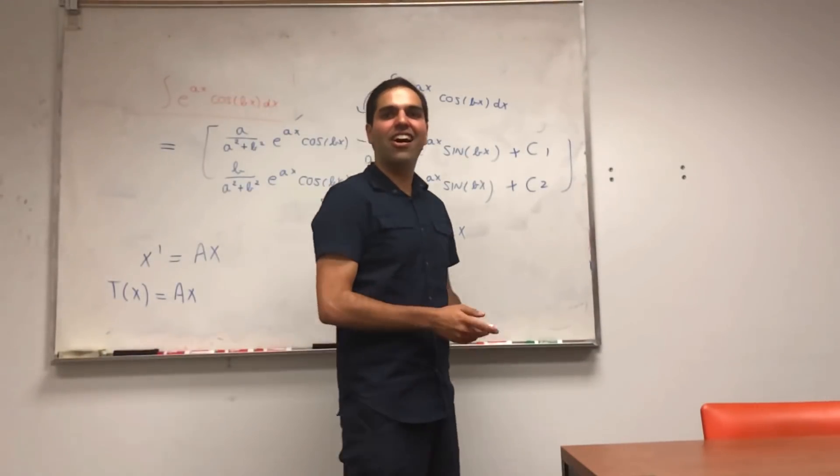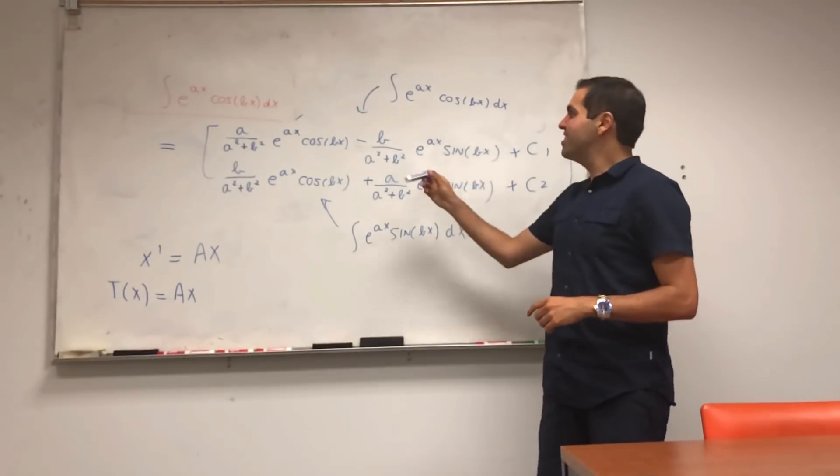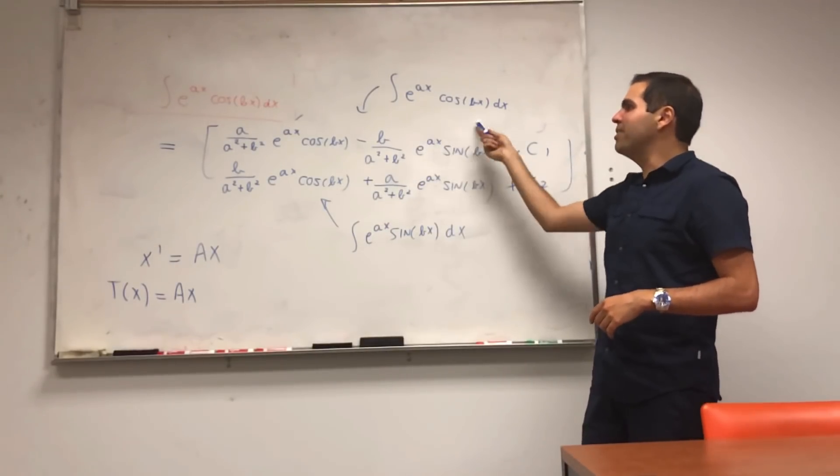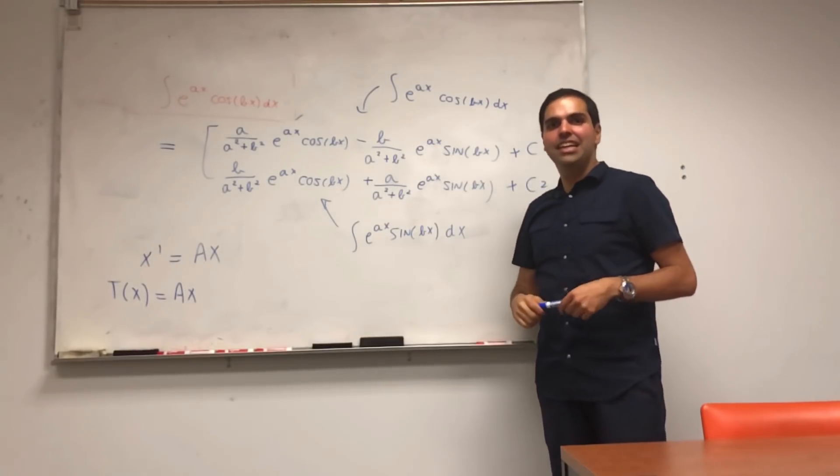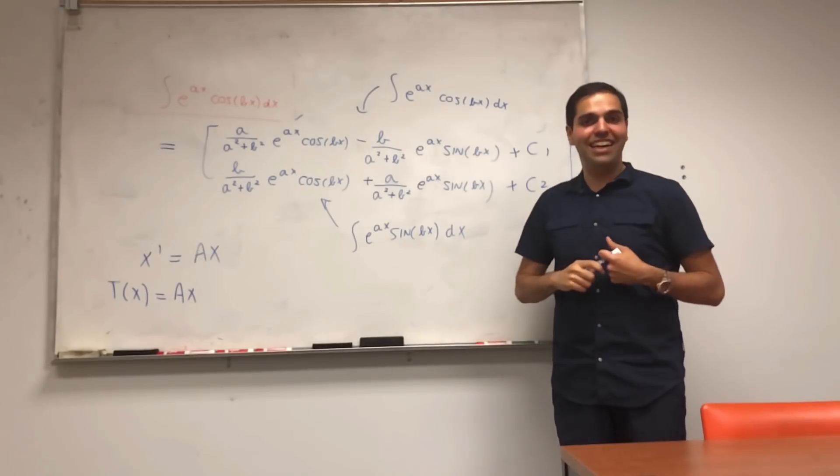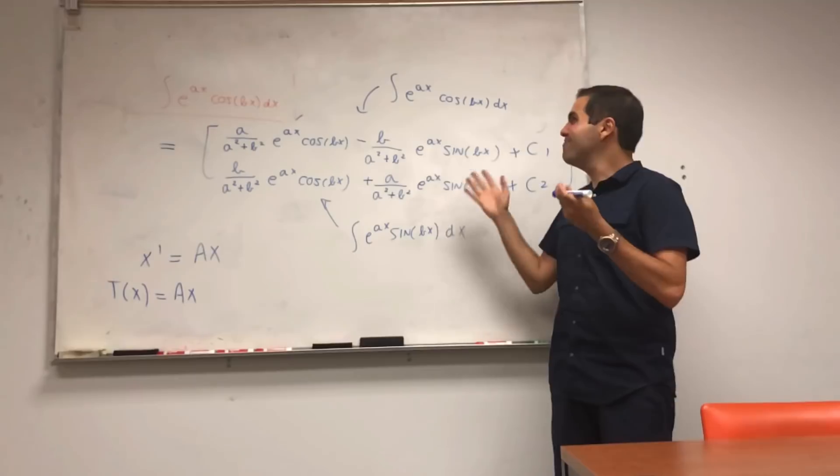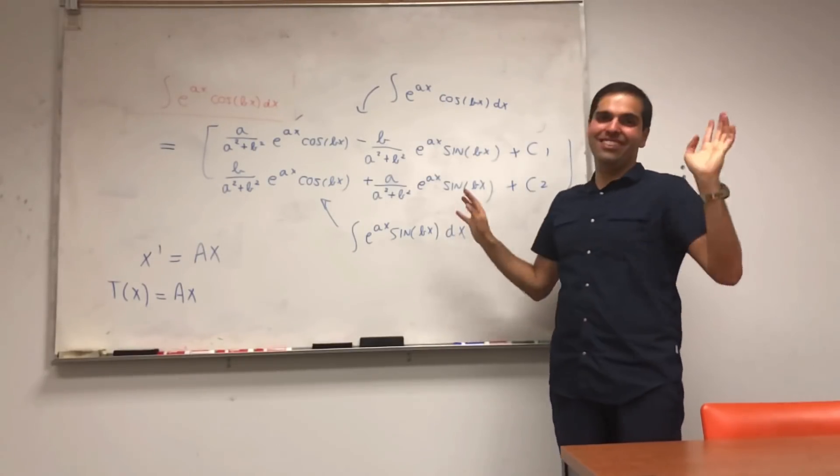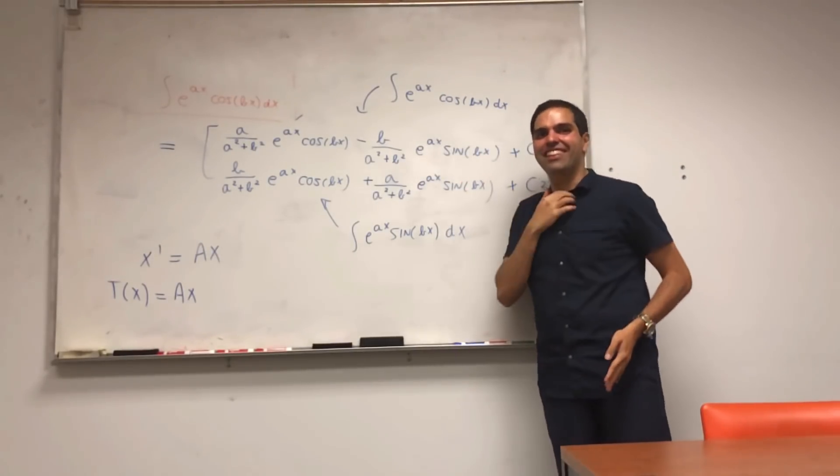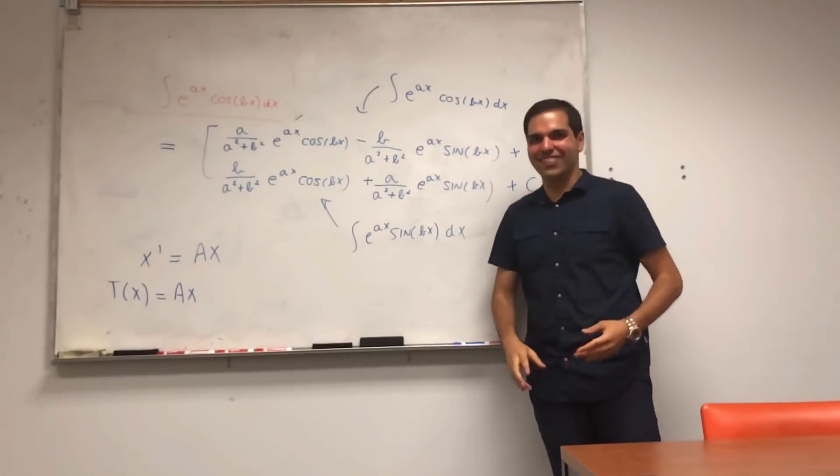And at least in the constant coefficient case, it just gives you linear combinations of exponentials and trig and maybe with some powers of t attached. So it is pretty cool, mind-blowing, but it doesn't always work. But still, I love linear algebra and I think this just shows you how awesome it is.